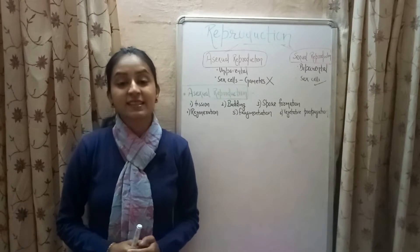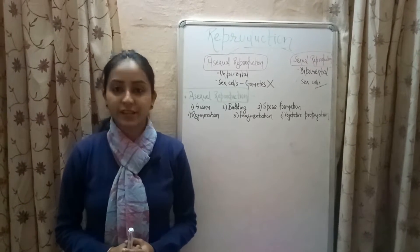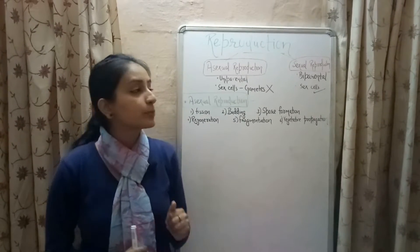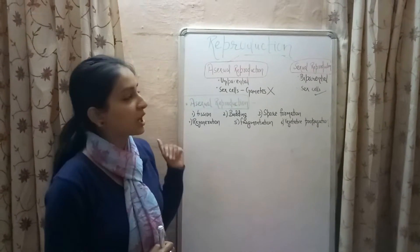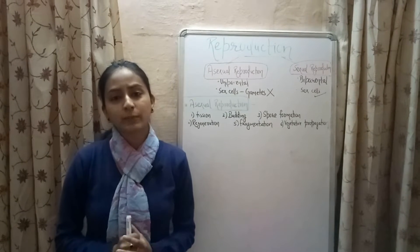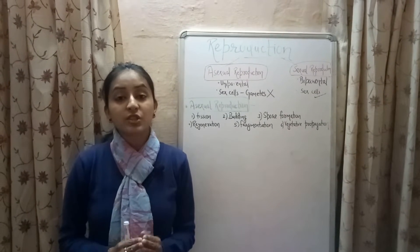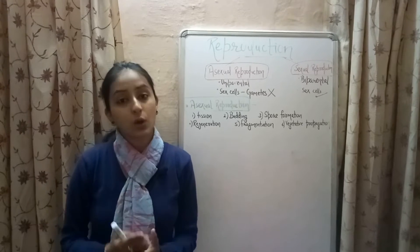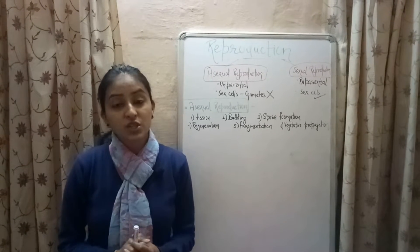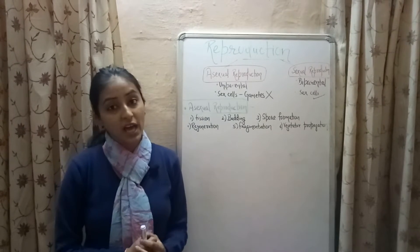Welcome to Biology at Ease. This video is part 9 of the life processes lecture series, and in this video we will be discussing the process of reproduction. So let's start with the definition. Reproduction is the process by which organisms produce their young ones, or it is the process of production of offspring by the existing organisms.